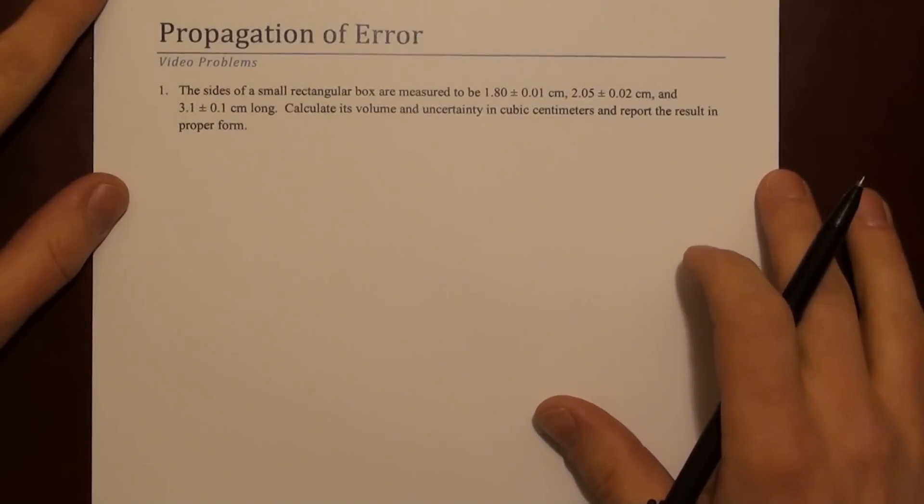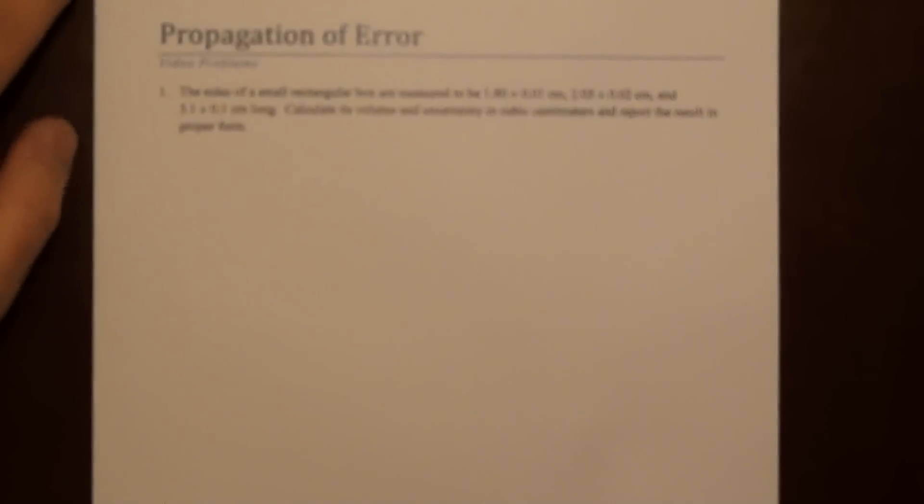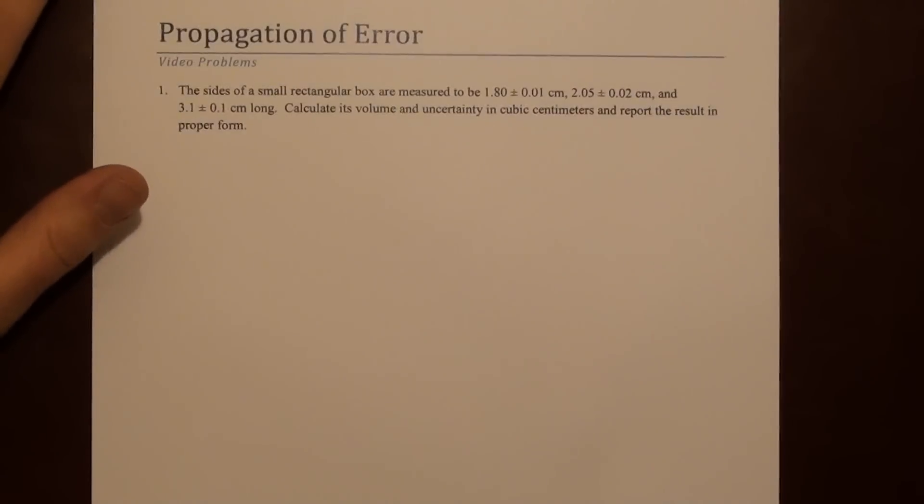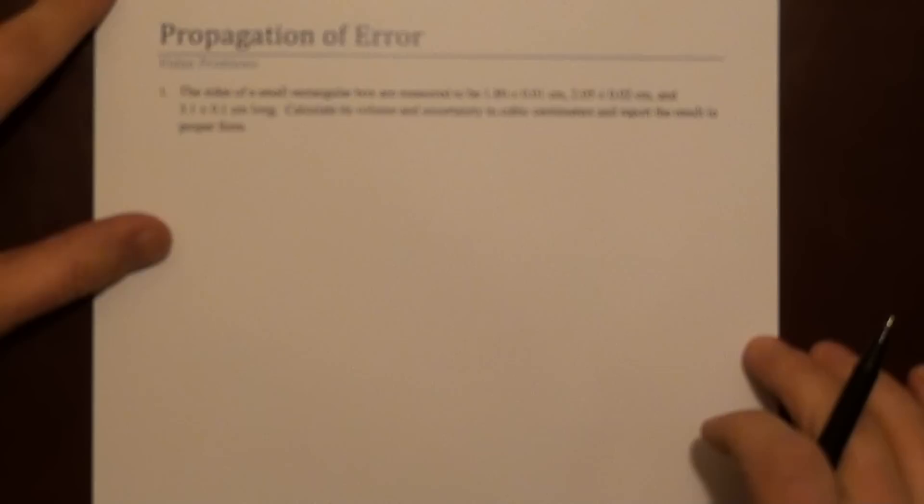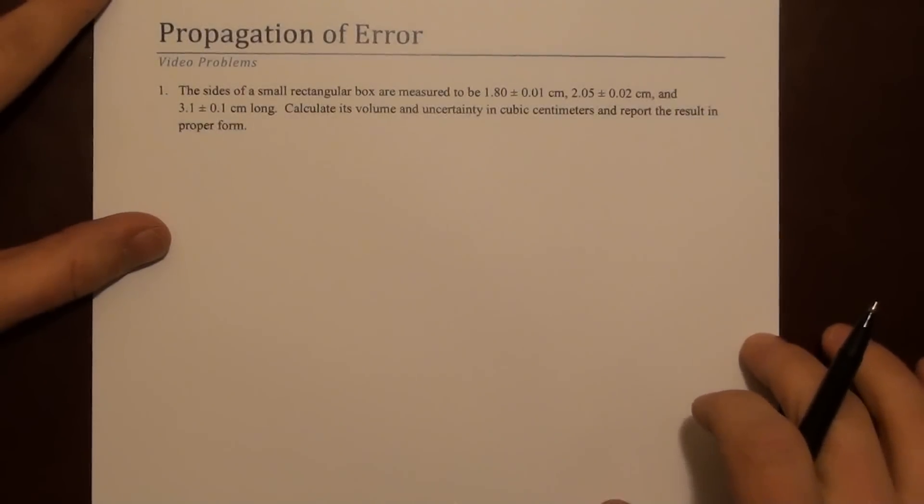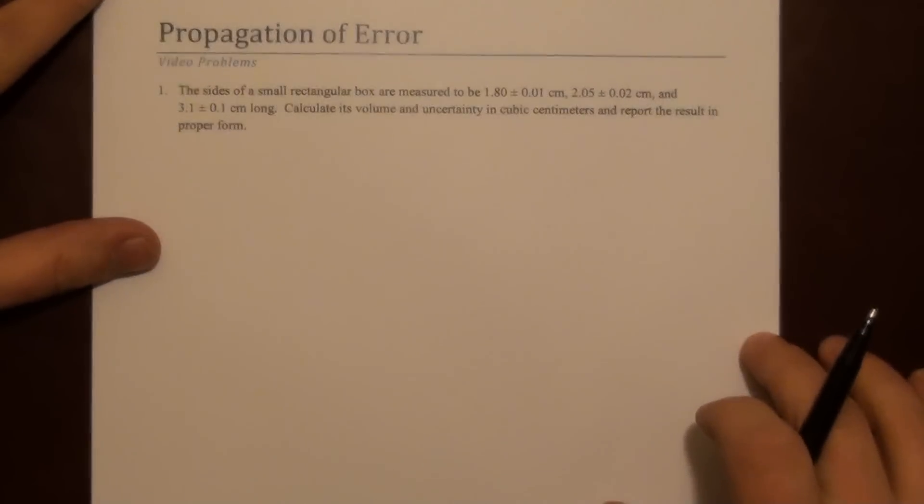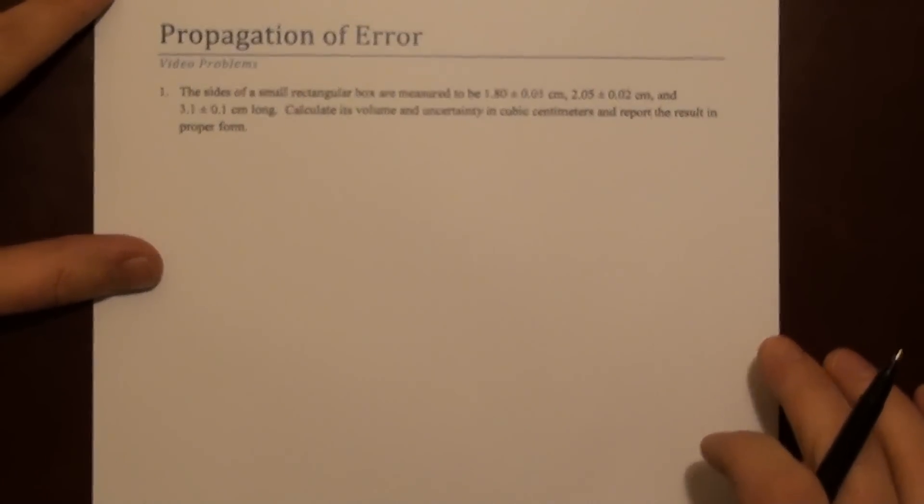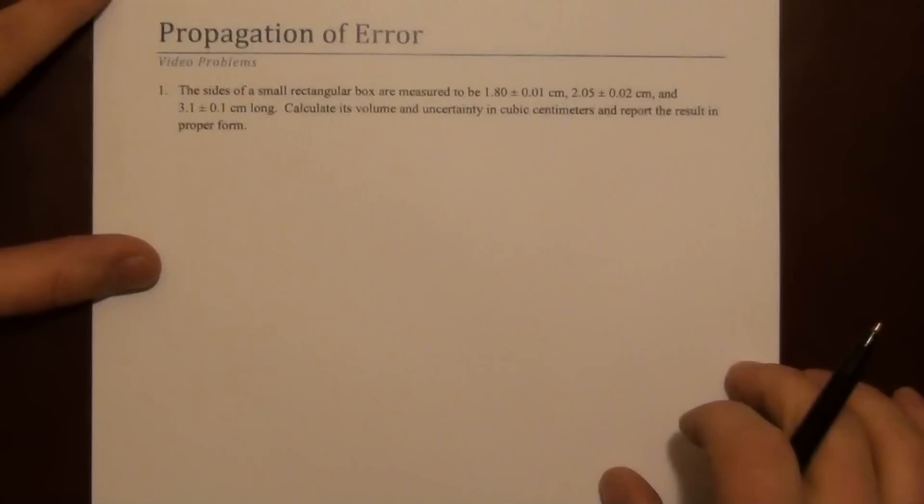So this is the method we use in this class. The problem is that sides of a small rectangular box are measured to be 1.8 ± 0.01 cm, 2.05 ± 0.02 cm, and 3.1 ± 0.1 cm. Calculate its volume and uncertainty in cubic centimeters and report the result in proper form.